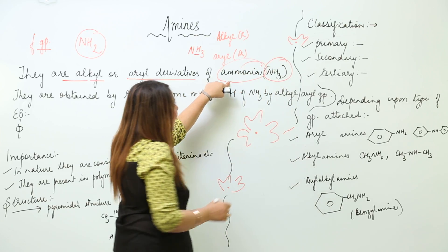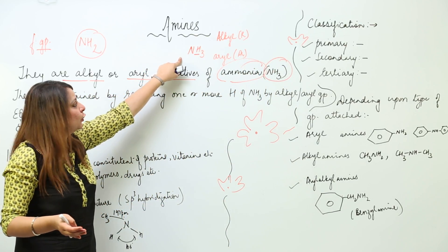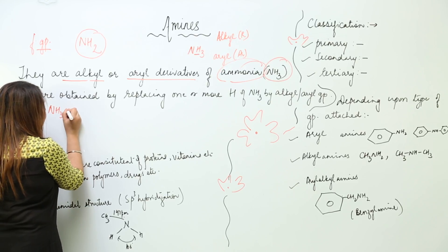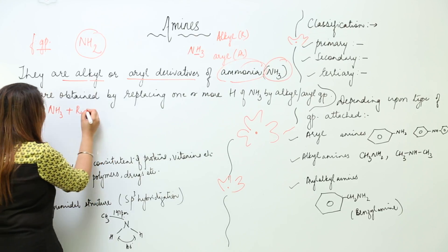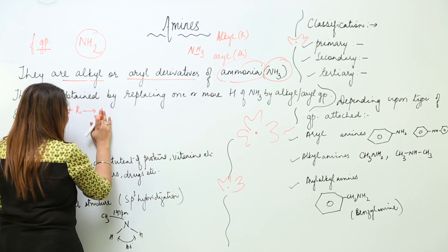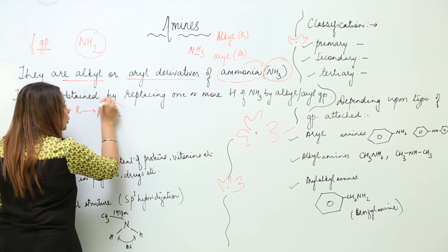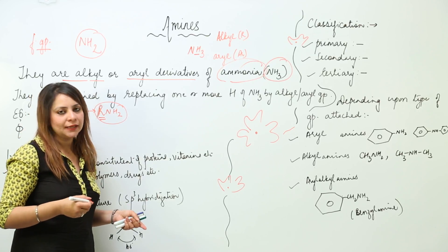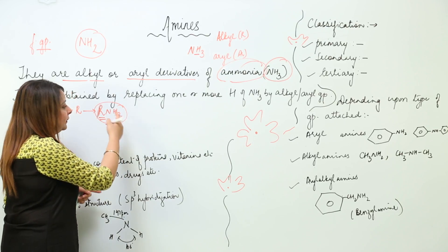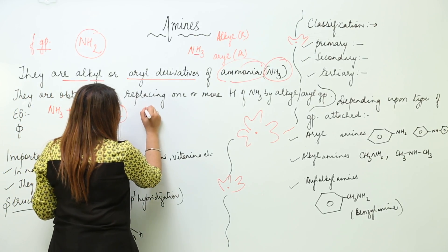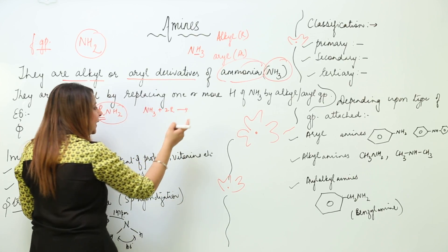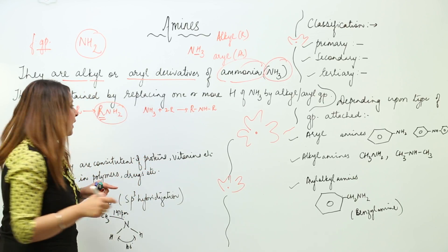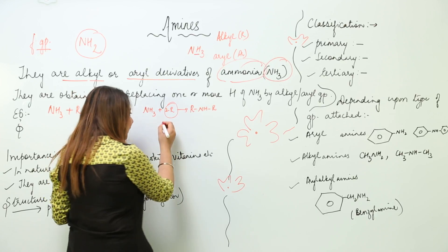Amines are obtained by replacing one or more H atoms of ammonia by an alkyl or aryl group. For example, if we add one alkyl group to ammonia, one H is replaced and we get R-NH2 — this is called an amine. It may also have two alkyl groups: two H atoms are replaced, giving R-NH-R.